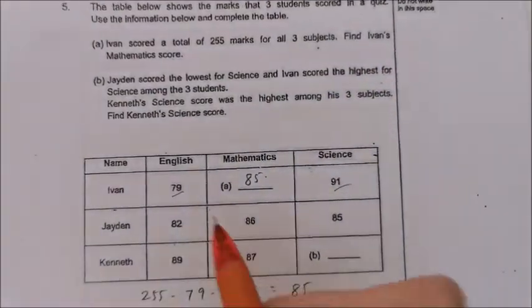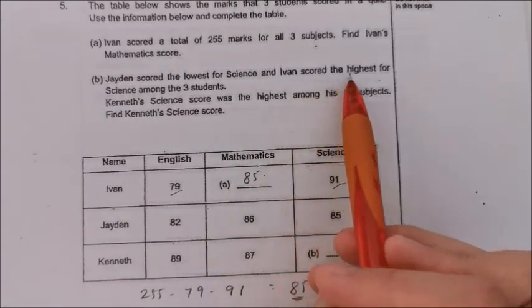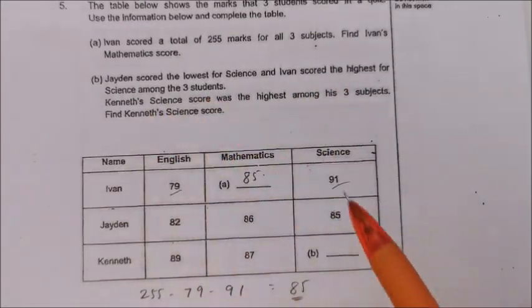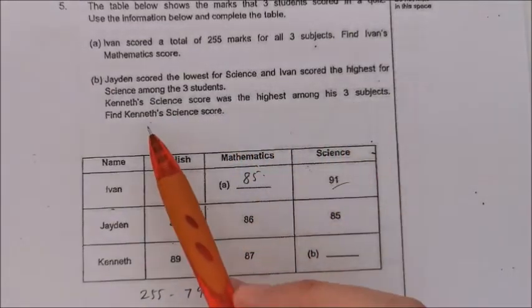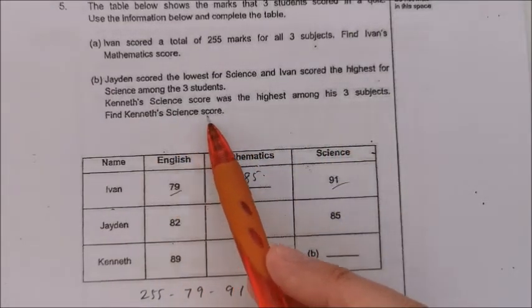Jayden scored the lowest for science and Ivan scored the highest for science among the three students. Kenneth's science score was the highest among his three subjects. Find Kenneth's science score.